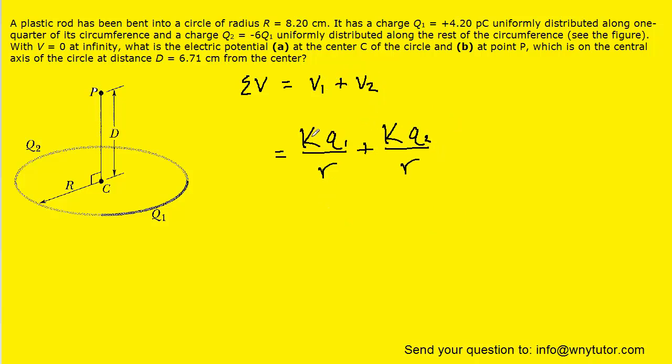Now, both of these terms have a factor of k over r, so let's factor that out. That leaves us with q1 plus q2 inside the parentheses.